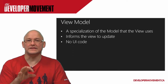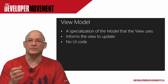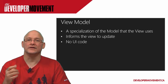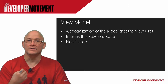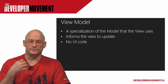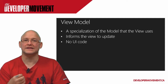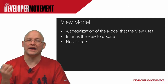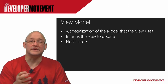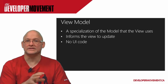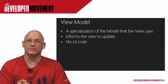Your view model is basically the separation of the model that the view uses — this is where the view goes to get what it needs from the model. It lets the view know when it's supposed to update its data, allows the view to make different commands against the business logic and data. There should be no UI code in the view model at all.